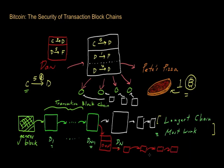That's the chain he wants people to use because it contains this fake transaction but removes the previous transaction where he gave money to Pete. To solve a proof-of-work, Dan has to basically use whatever computing power he has access to and start working on solving these puzzles. There are no known shortcuts for solving them.